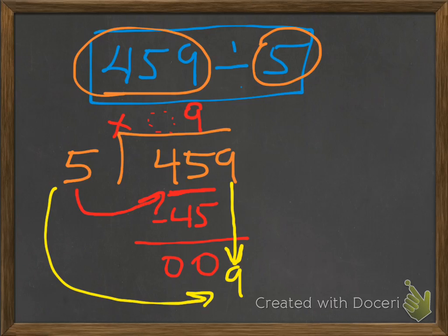And again, 5 times what gives us 9, or close to 9. And we know that we could do 1. Because 5 times 2 would be 10, and that's too many. So 5 times 1 is 5.